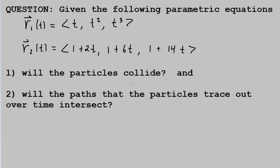Will the particles collide, particles that travel along this as t is traced out, and will the paths that the particles trace out over time intersect? These are two separate questions. Let's have a look at this graphically and then go through it algebraically.